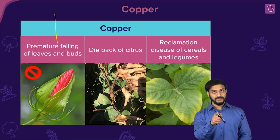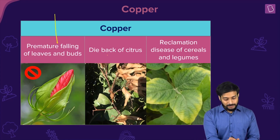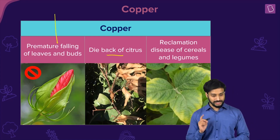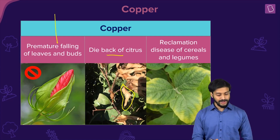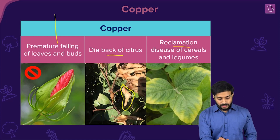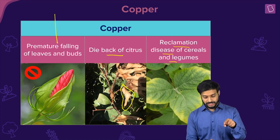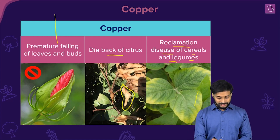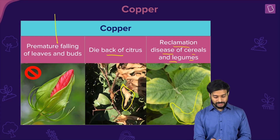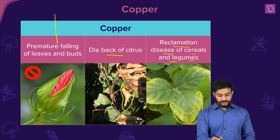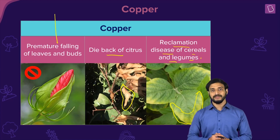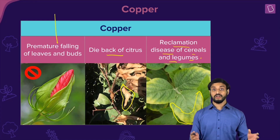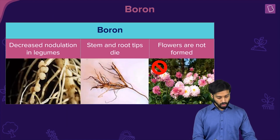Copper deficiency causes premature falling of leaves and buds, die-back of citrus — where leaves become brown, curled, and dried — and reclamation disease of cereals and legumes, which shows yellowing of leaves. Seed setting also does not happen properly when copper is insufficient.